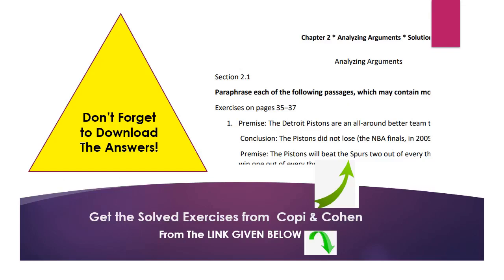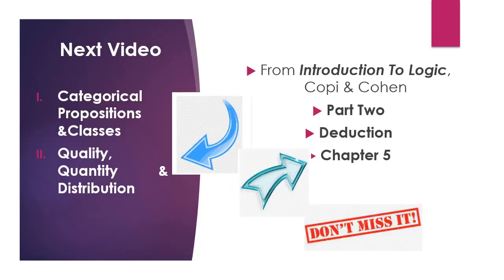I hope you've got some idea about paraphrasing and diagramming arguments. I have uploaded some answers from the textbook Introduction to Logic by Copi and Cohen in the description below — you can download from there and practice at home. In the next video, we will start chapter five on deductive logic, which is categorical propositions, covering the four classes of categorical propositions and what we mean by quality, quantity, and distribution. Please stay tuned and don't miss the videos. Subscribe. Thank you and goodbye.